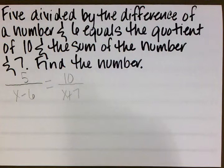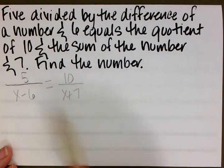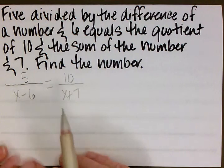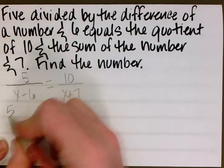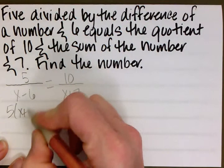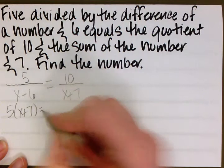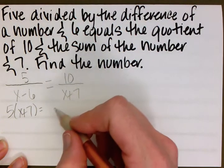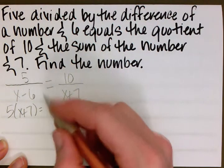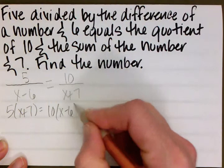We have our equation now, and all we have to do is solve. Because there's an equal sign between the two fractions, we can cross multiply. That gives us 5 times x plus 7 equals 10 times x minus 6.